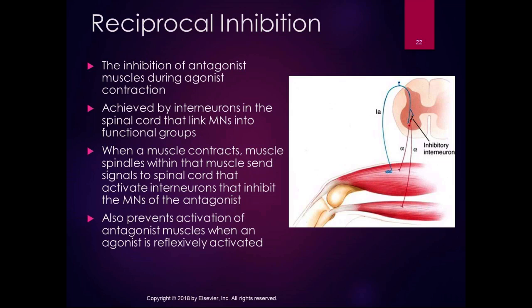When the muscle contracts, the muscle spindles send signals to the spinal cord that activate the neurons — they are the same ones that inhibit the motor neurons of the antagonist. It also prevents activation of antagonist muscles when an agonist is reflexively activated, so it's not just a voluntary movement.